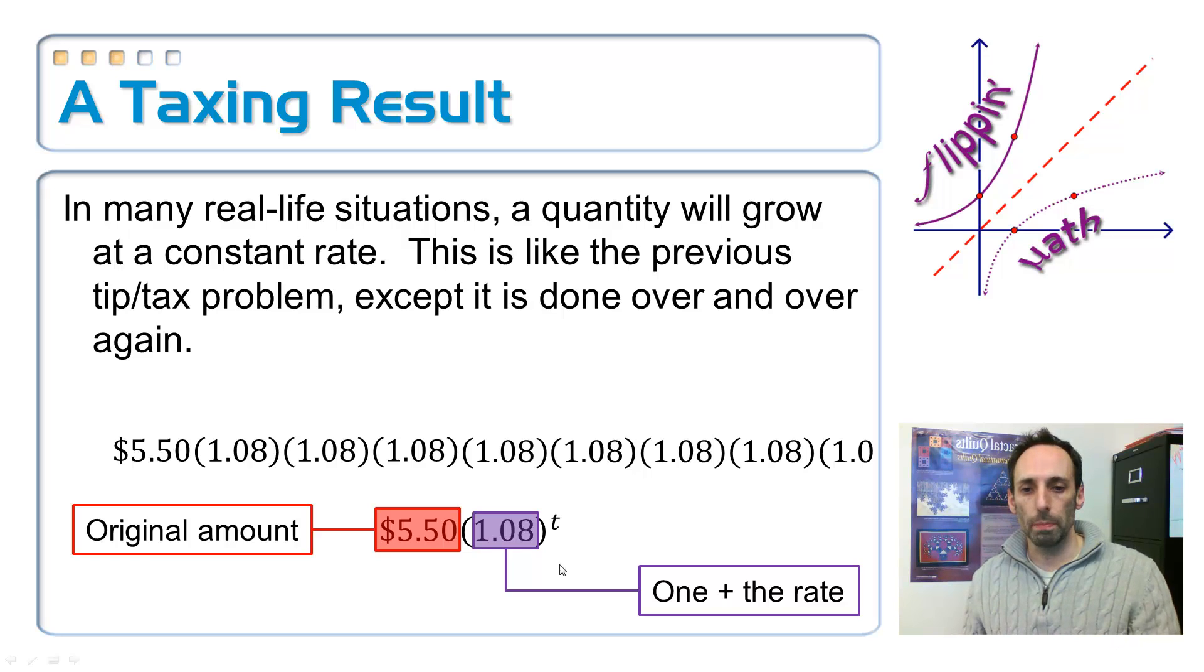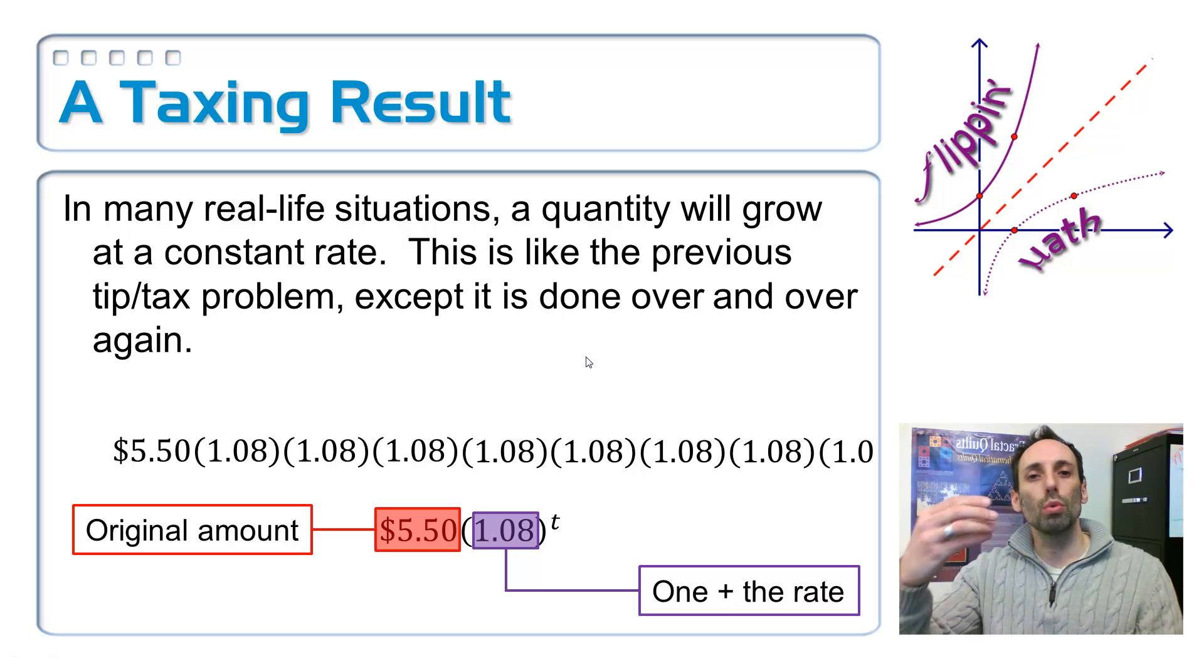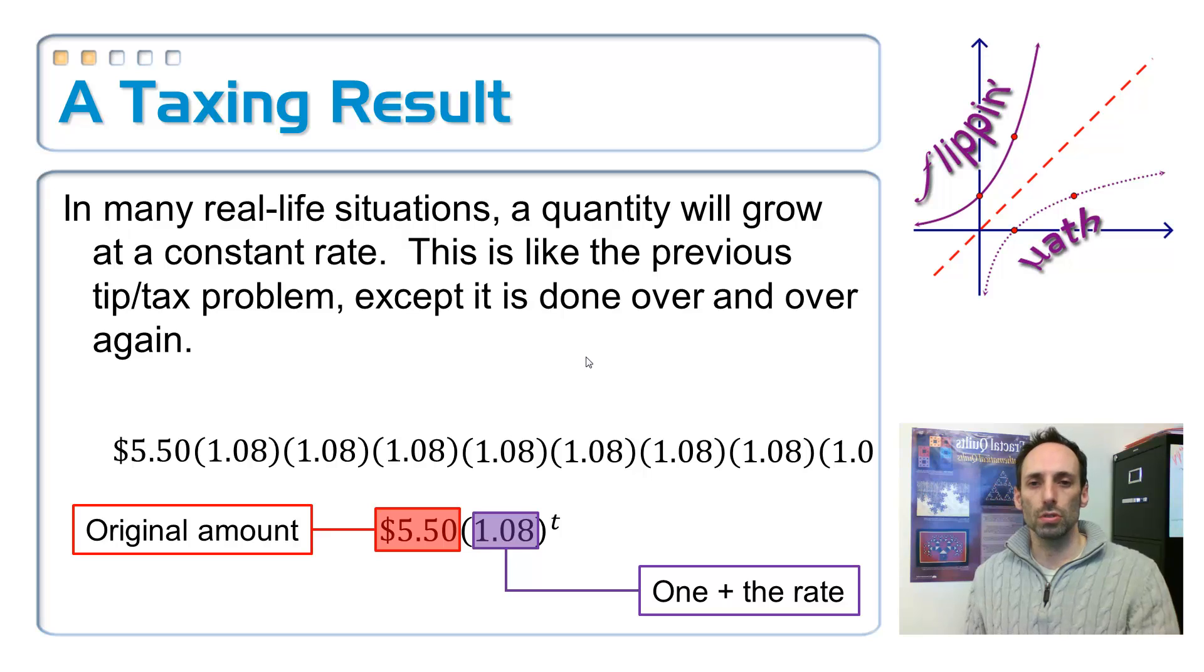This is your base. The thing that's in the purple is your b value for your function. Notice that it is bigger than 1. Since it's bigger than 1, this must be a growth function. It's exponential growth.